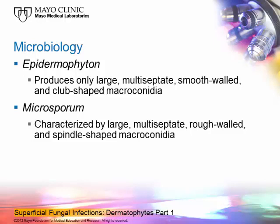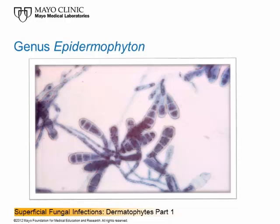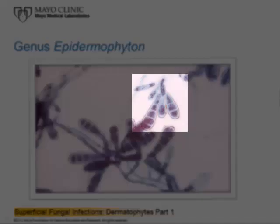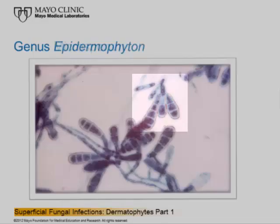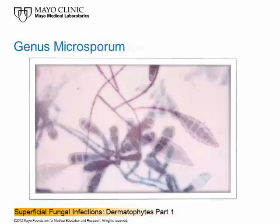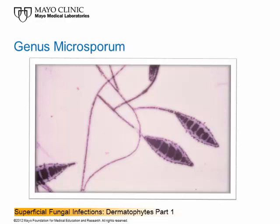This slide shows Epidermophyton with its club-shaped smooth-walled macroconidia — no spikes on them at all. They occur singly or in clusters of two, and no more than three. The genus Microsporum is characterized by rough-walled macroconidia, in contrast to Epidermophyton. The shape of the macroconidia varies by organism; this one is somewhat spindle-shaped.